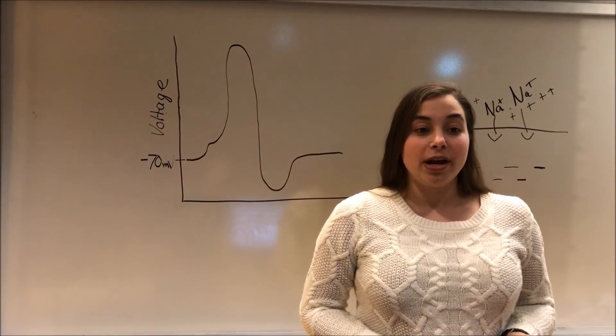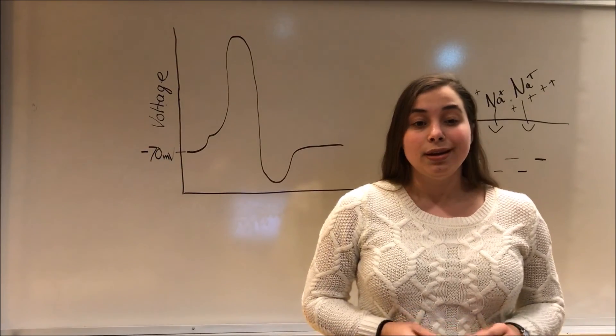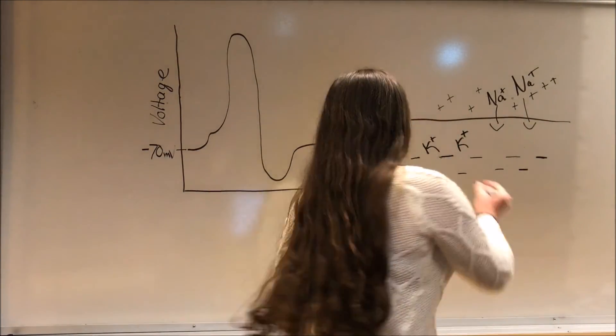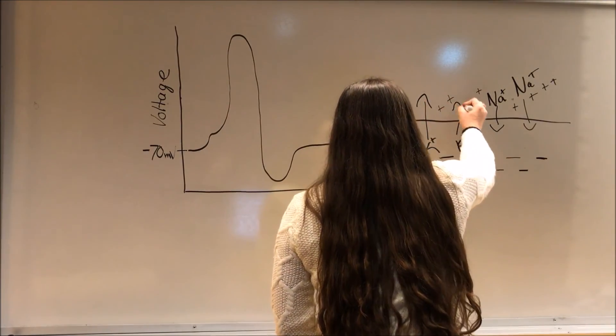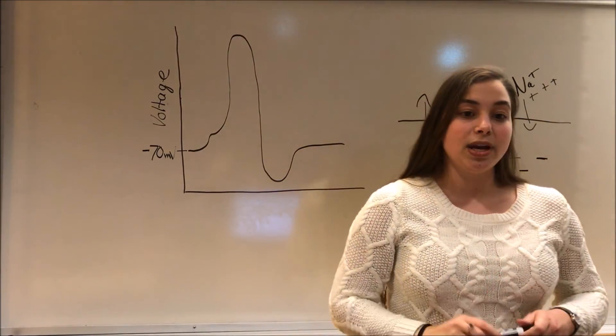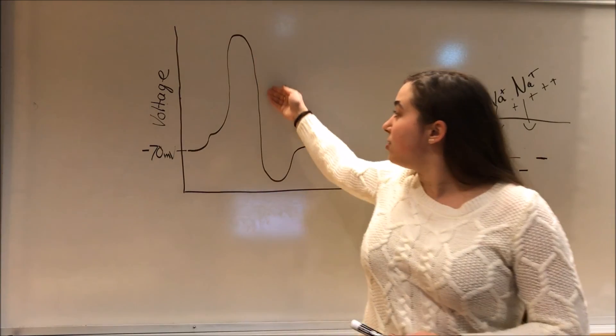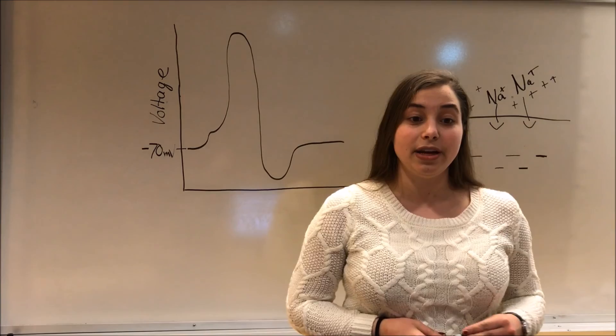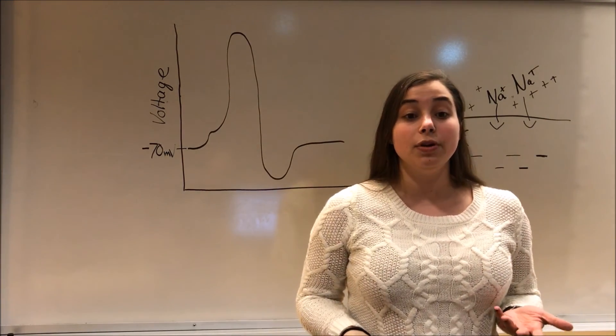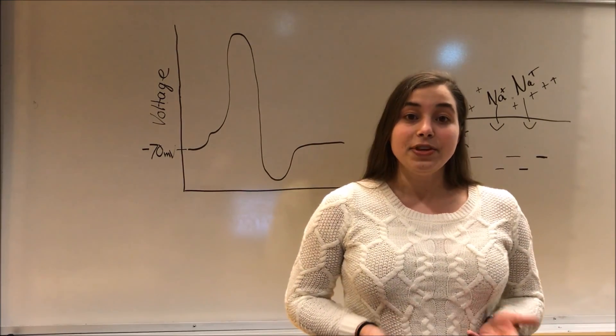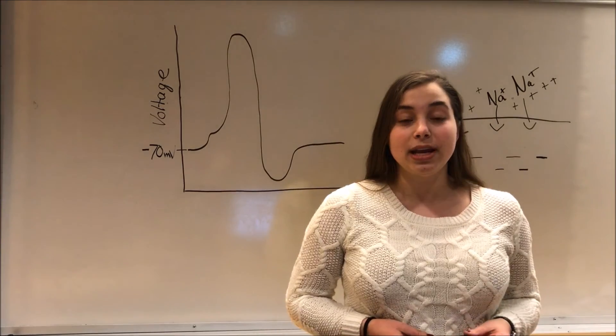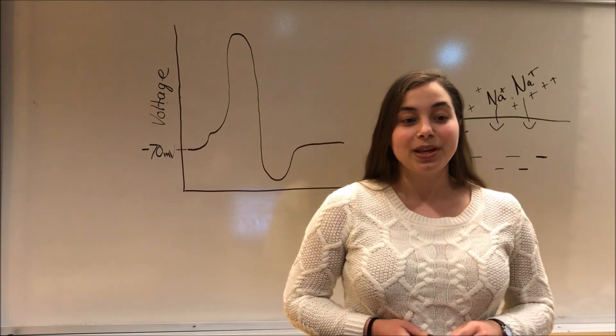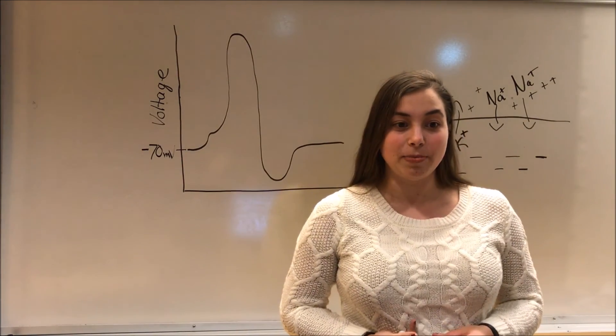Soon after the sodium ion channels open, potassium ion channels will also open. Because the inside is now more positive, the potassium ions will flow out of the cell, causing the inside of the cell to become more negative again. So, as you can see here, the voltage will start to fall. Additionally, the sodium ion channels will deactivate, which means that sodium will no longer flow in or out of the cell. At this point, the sodium ion channels cannot open again until the cell returns to its resting potential, which prevents another action potential from occurring. This is called the absolute refractory period.